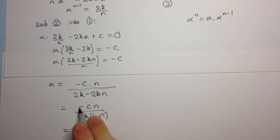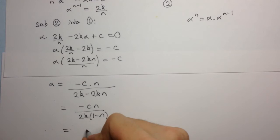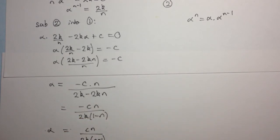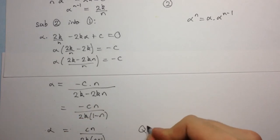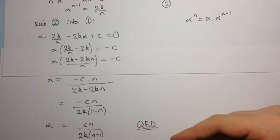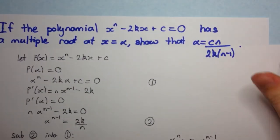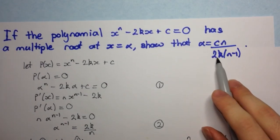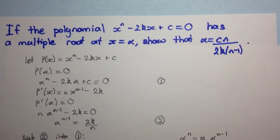Distributing the minus one through the bracket gives us cn over 2k into n minus 1. So alpha equals cn over 2k into n minus 1. QED — we have completed the proof and shown the required result. Thank you.